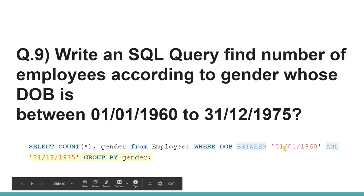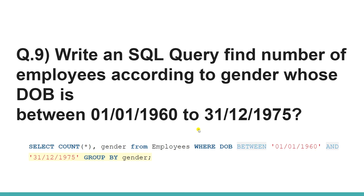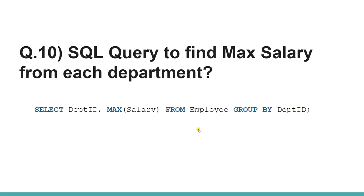The tenth question is to find the maximum salary from each department — a very common and important question. You select the department ID and MAX salary, then GROUP BY department ID to get the highest salary per department.